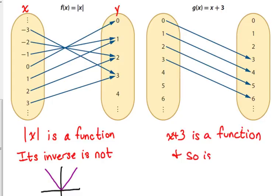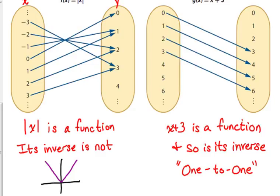And so is its inverse, because those y values only have one x value. If a function and its inverse are both functions, we call that one to one. Every x has one y, and every y has only one x. x plus 3 is one to one. x plus 3 is a linear function, so it passes both vertical and horizontal line tests.